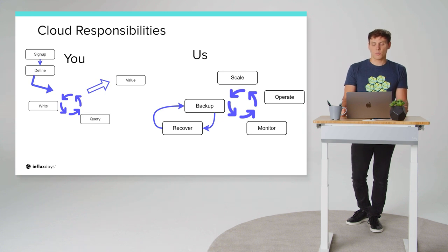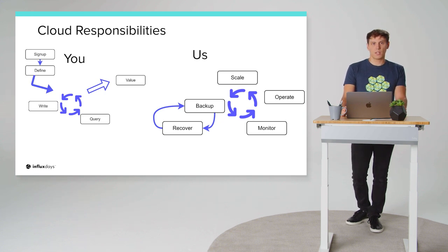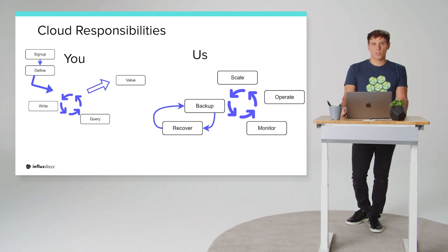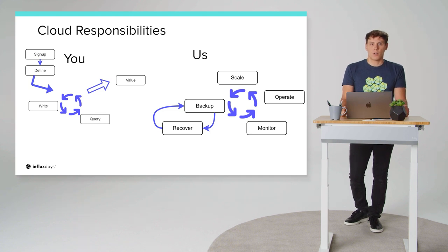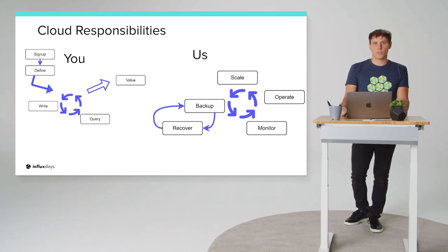Let's put open source and cloud side by side for what you're responsible for. The non-trivial and important responsibilities are handled by us — by my team. We take care of the monitoring, the operating, the scaling, the creation of backups, and the recovery when needed. This is a typical trade-off in a cloud software service: you get to focus on your business, and we handle everything else. My team are the experts in running InfluxDB Cloud. There are 12 of us with a round-the-clock call schedule, and lessons we learn from one customer we can apply to benefit all customers.